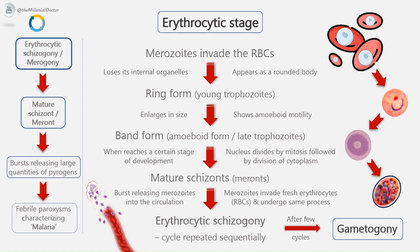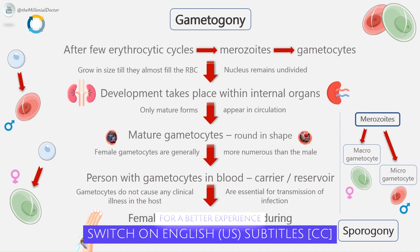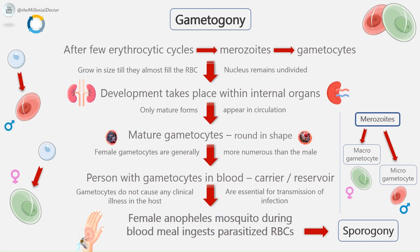After a few erythrocytic cycles, some of the merozoites that infect RBCs enter a process called gametogony. They do not proceed to become trophozoites or schizonts, but instead develop into sexually differentiated forms called gametocytes. They grow in size until they almost fill the RBC, but the nucleus remains undivided. Development of gametocytes generally takes place within the internal organs, and only the mature forms appear in circulation. The mature gametocytes are round in shape, except in Plasmodium falciparum, in which they are crescent-shaped. Female gametocytes are generally more numerous than the male. Gametocytes appear in circulation 4 to 5 days after the first appearance of asexual forms in Plasmodium vivax, and 10 to 12 days in Plasmodium falciparum. A person with gametocytes in blood is a carrier or reservoir. A gametocyte concentration of 12 or more per cubic millimeter of blood in the human host is necessary for mosquitoes to become infected.